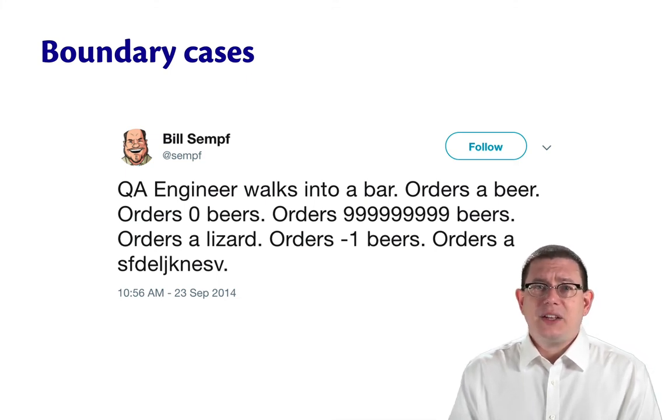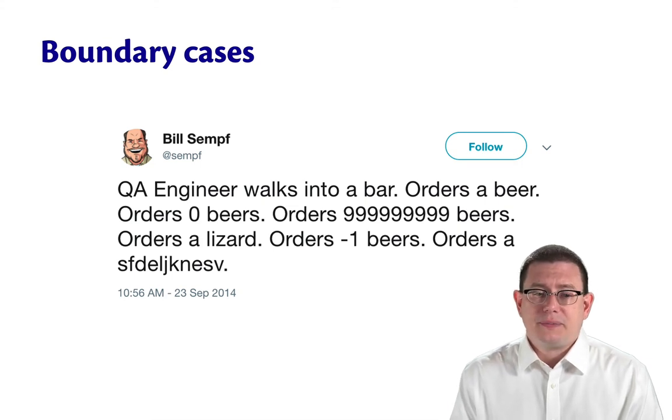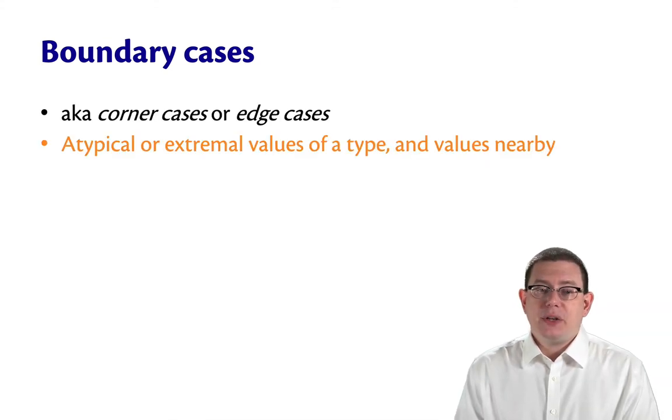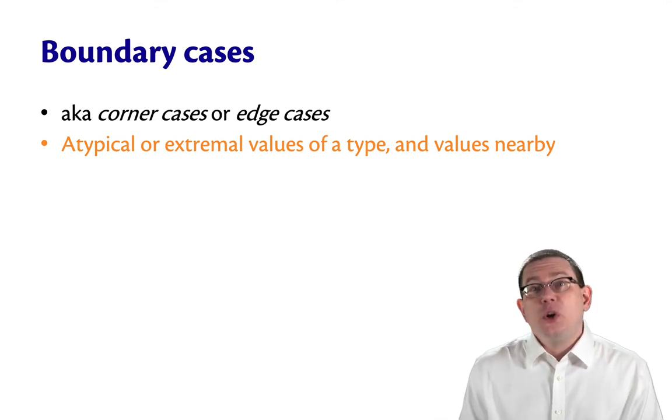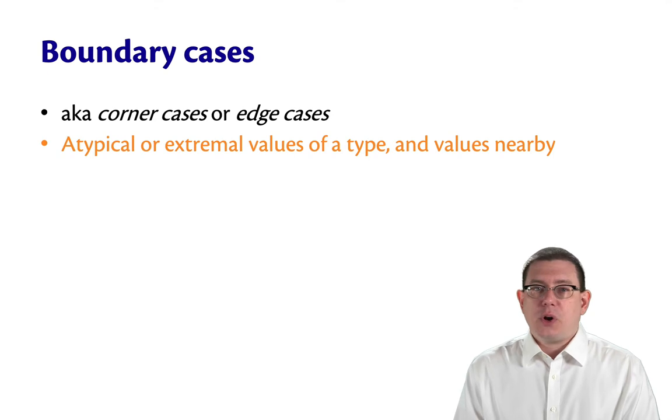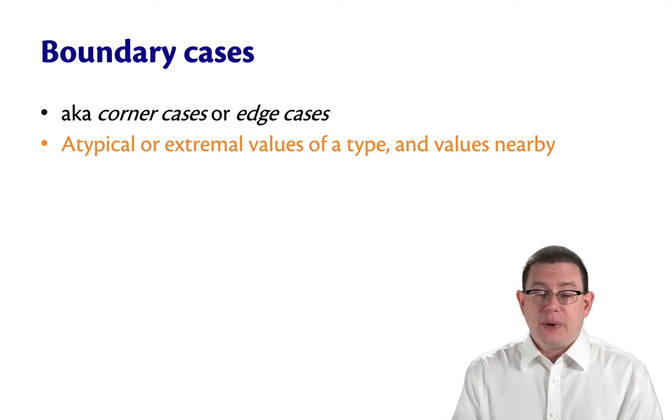This is what good boundary value testing looks like. Testing things that look maybe a little ridiculous. Boundary cases are those inputs that are atypical or extremal values of a type and values nearby as well. So sometimes these are called corner cases or edge cases as well.